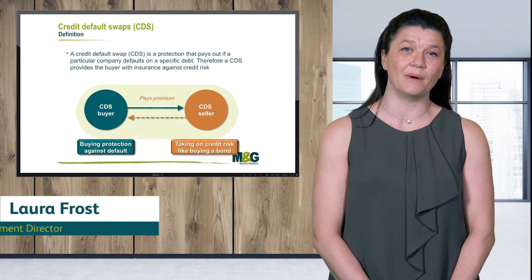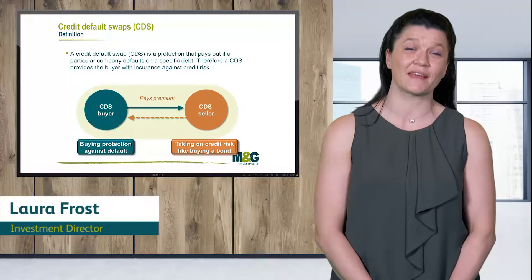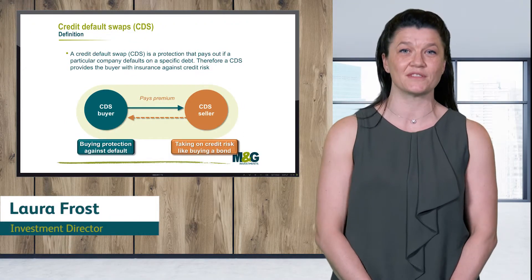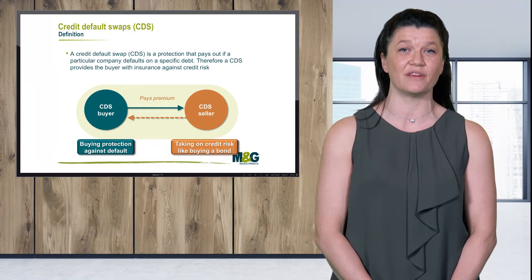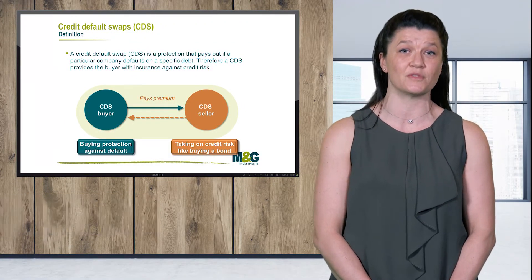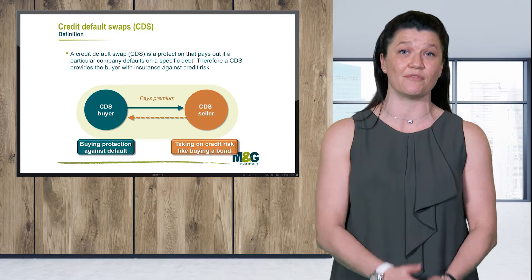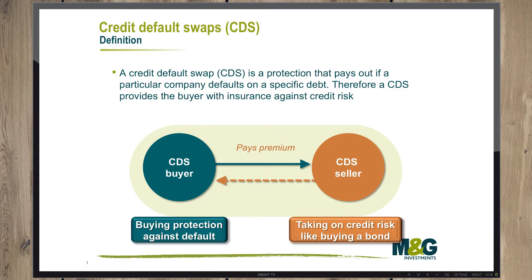Credit default swaps are bilateral over-the-counter agreements where the protection pays out if a specific bond defaults within a given time frame. They are used on single names and also over entire indices. The mechanics are simple: as a buyer of CDS, I am paying a fixed coupon by way of a premium to protect me against default of that bond.